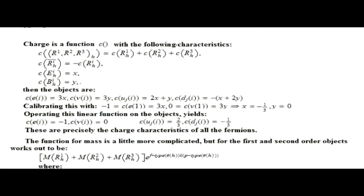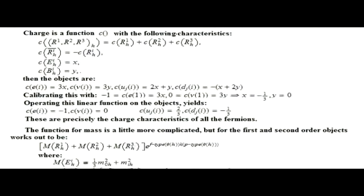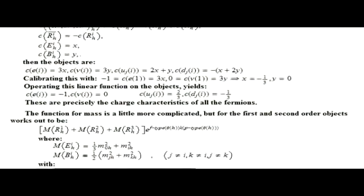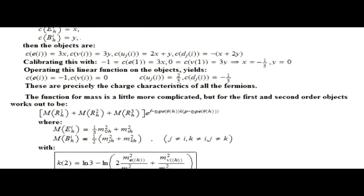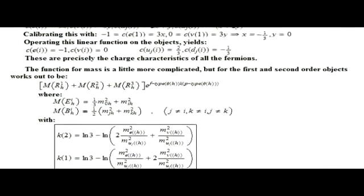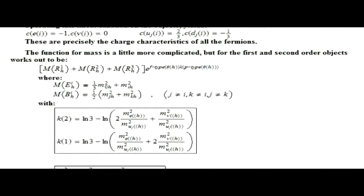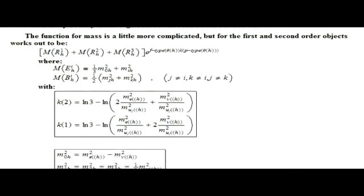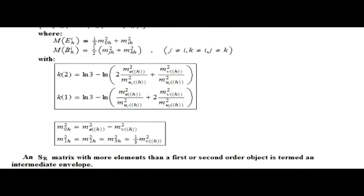An S sub R matrix with more elements than a first or second order object is termed an intermediate envelope. Note that the columns of the solitary S sub R matrix determine an object generation, and the row configuration of the members of a second order object for a given column determine the color of the second order object. As mentioned earlier, this has been the summary of my book, A Mathematical Preon Foundation for the Standard Model, available on Kindle through Amazon.com.